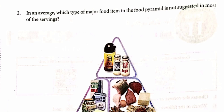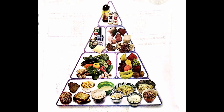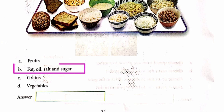On average, which type of major food item in the food pyramid is not suggested in most of the servings? The answer is B. Fat, oil, salt and sugar.